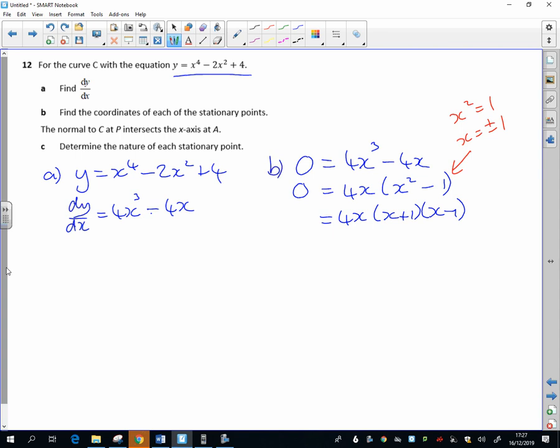So either way, I've got three stationary points, which makes sense - if it's a quartic, I could have three stationary points. And they are: x is 0, x is minus 1, and x is 1. And then just don't forget, if it says coordinates, don't forget to substitute back.